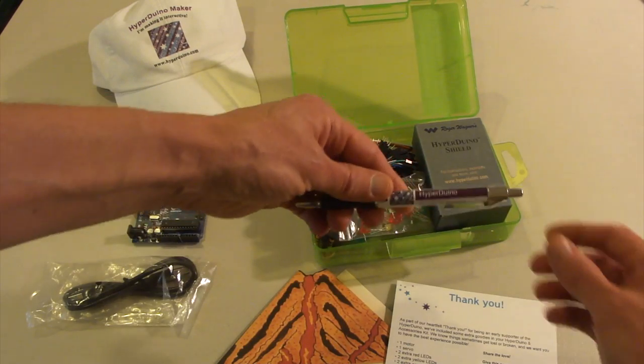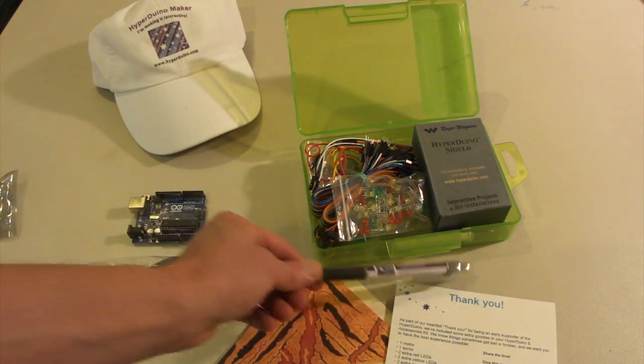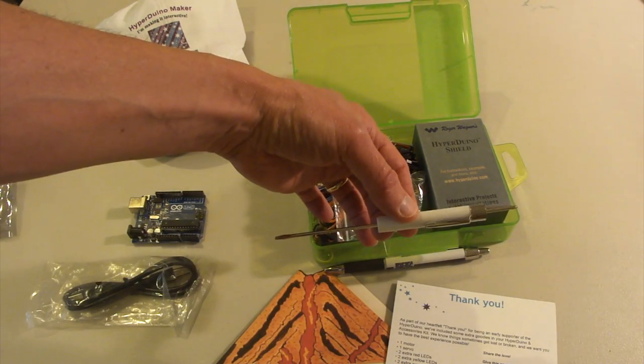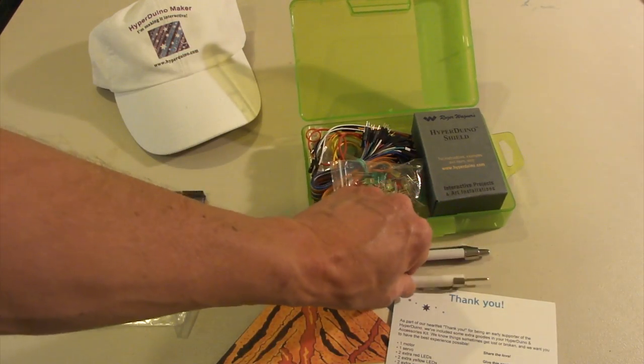So some bonus items that came with it. Here's a pen, a Hyperduino pen. Here's a screwdriver, Phillips on one end and flathead on the other.